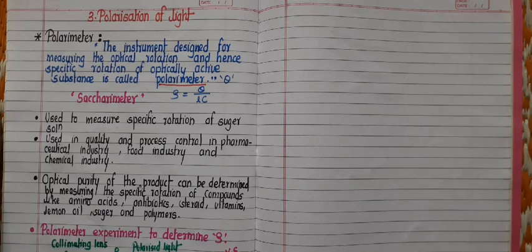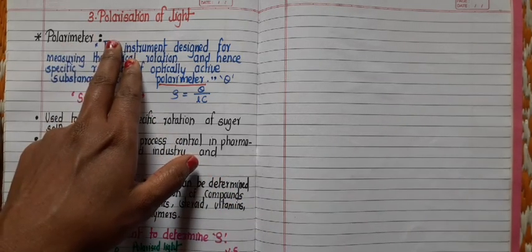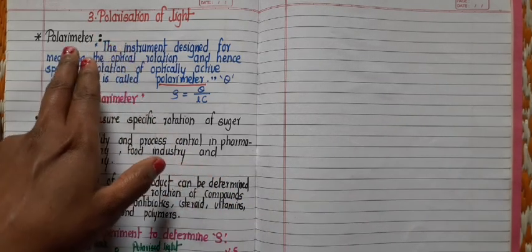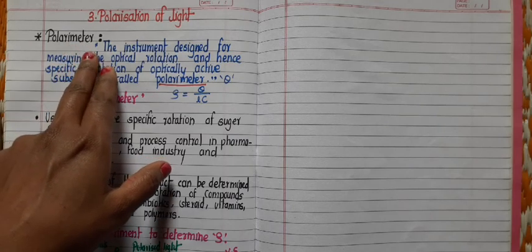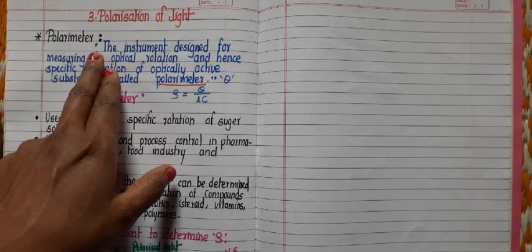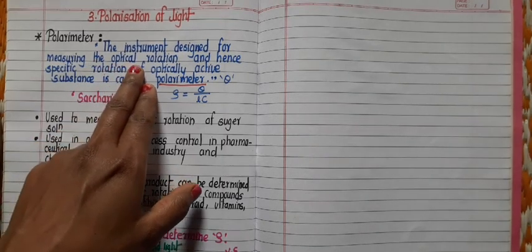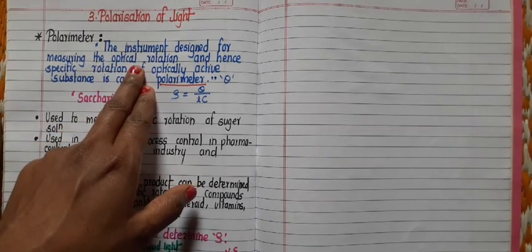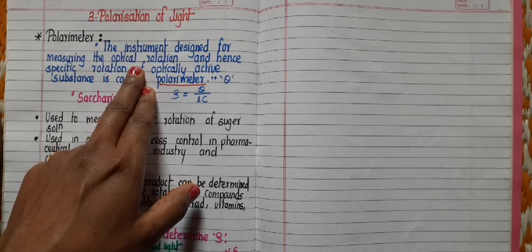The next application of polarization of light is polarimeter. This polarimeter is an instrument specially designed to measure the optical rotation of any optically active substance.